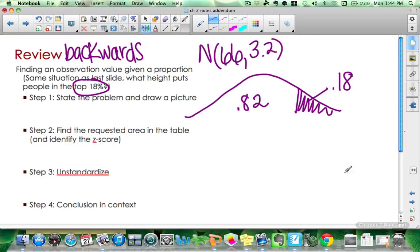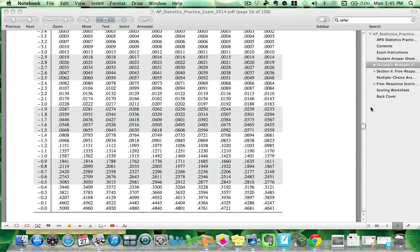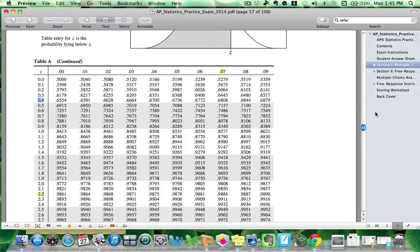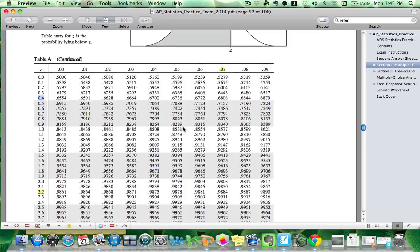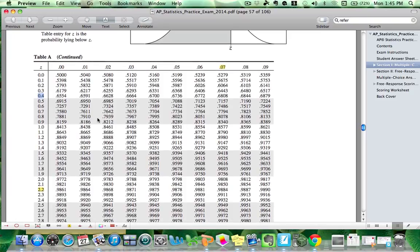This percentage is more than 50 percent. So I know I'm going to be looking for a positive z-score. Also, this is clearly above the mean, so the z-score must be positive. I'm looking for 0.82 in the guts, or the closest I can find. So 0.82, I'm going to choose this one's slightly closer, 0.8212. I know that that's the closest because 0.8186 is a little bit further from 0.82, and 0.8238 is way over. And so the z-score I find is 0.92.